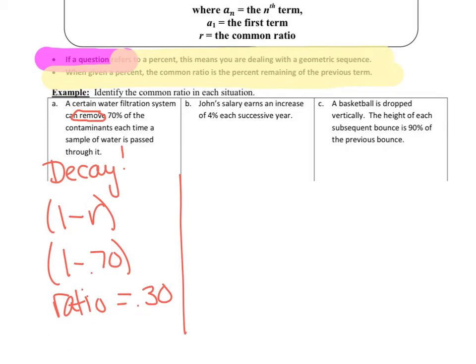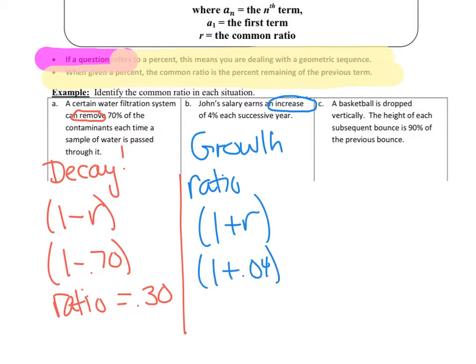Let's try the next one. John's salary earns an increase of 4% each successive year. Keyword being increase. If something's going to increase, it's growth. So my ratio is 1 plus the rate. So I'm going to do 1 plus, be careful, 0.04. So my ratio is 1.04.